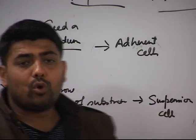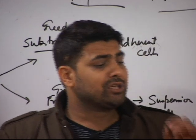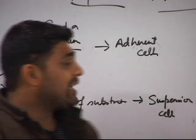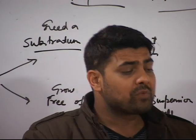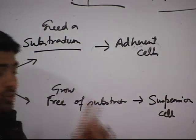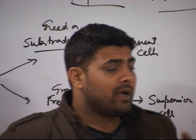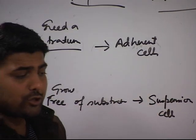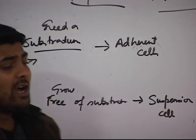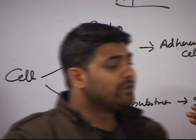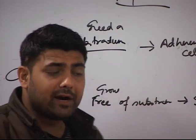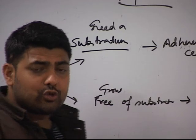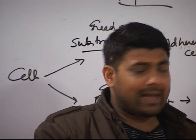Suspension cells do not need any substratum to attach — they just proliferate in the medium. As soon as the media and space are available, they grow. Adherent cells do not proliferate until they can attach to the substratum. For growing adherent cells, we need special tissue culture vessels and special tissue culture plasticware coated with certain chemicals that enable cells to adhere and proliferate. Suspension cells do not need any such coated vessels and can grow in normal sterile plasticware.